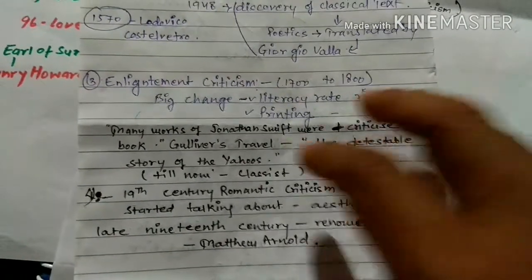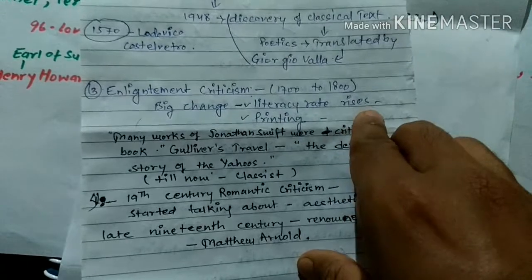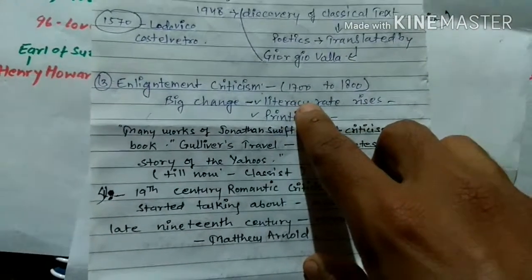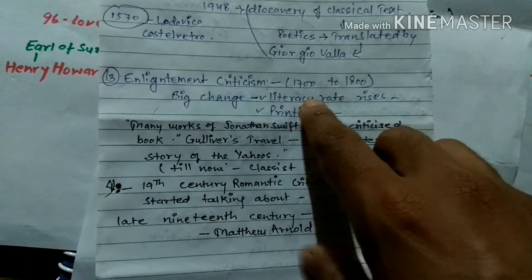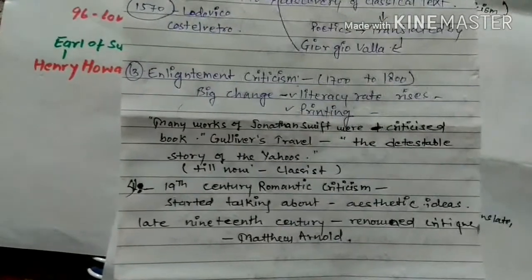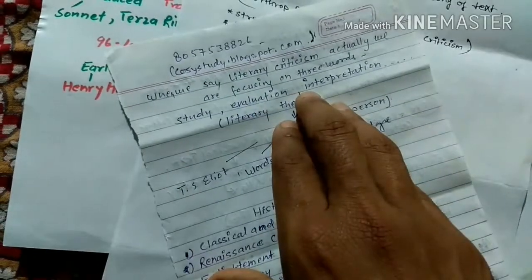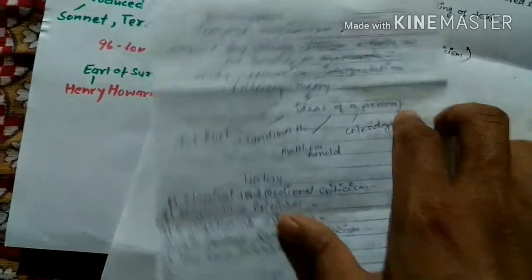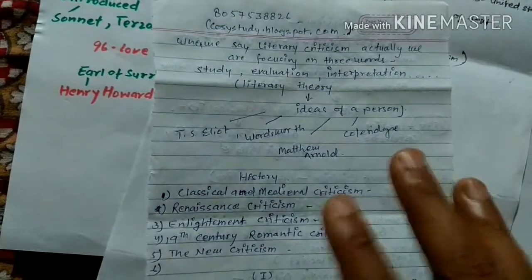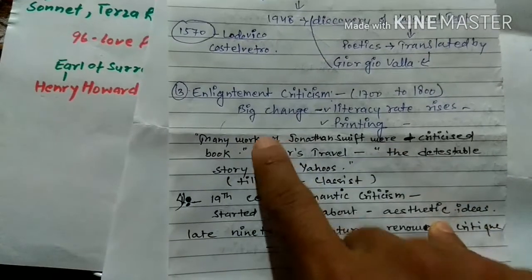The big change in enlightenment criticism was because of the printing of books. More people were literate and could read, so the literacy rate rose. Lots of people started reading works. Before this, only an elite group was reading. Now, more people were studying, evaluating, and doing interpretations, so criticism increased rapidly during this period.